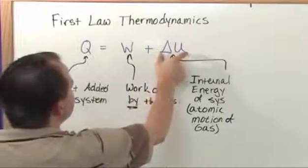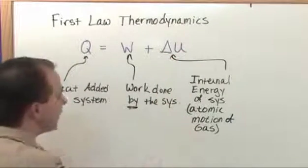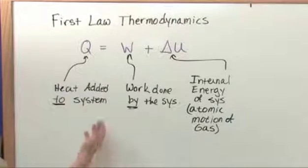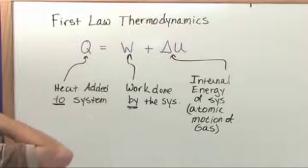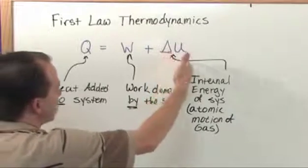Plus it goes into raising the internal energy of the gas basically, the atomic motion of the gas. So if you think about this for a second, if you have a cylinder and a piston and you put a flame under it, some of that energy is going to go into the piston rising obviously. Delta U—delta anything always means final minus initial.